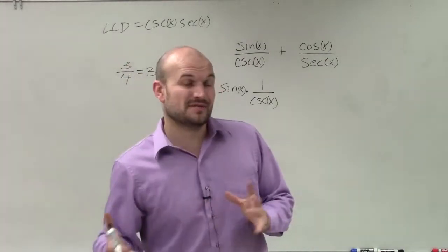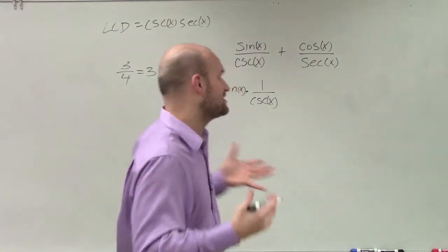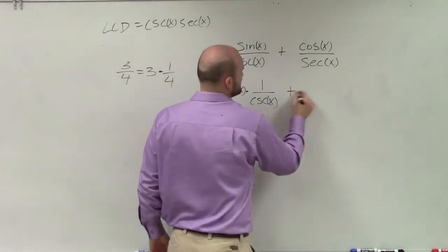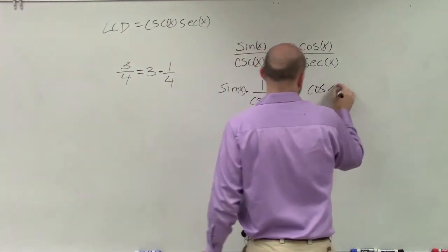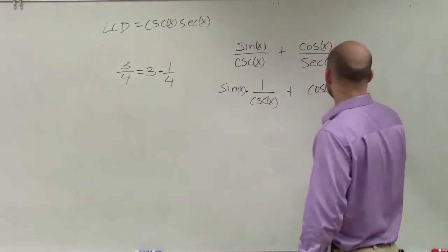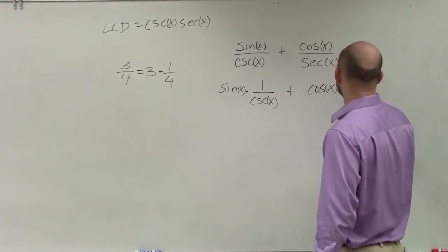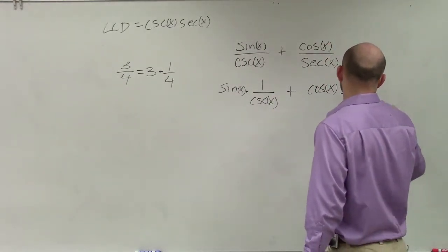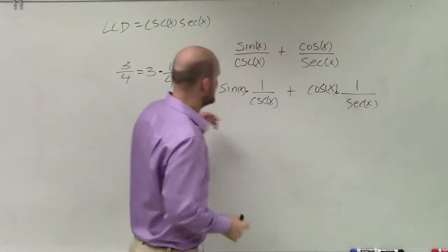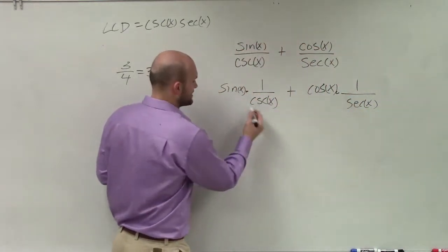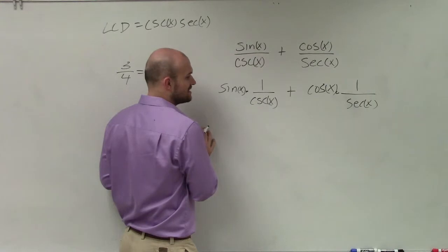The reason I thought of writing it this way is because by looking at my reciprocal identities, when I have a function over 1, I know I can use my reciprocal identities. So here I have sine of x times 1 over cosecant of x. Well, 1 over cosecant of x is sine. So really, I have sine of x times sine of x.